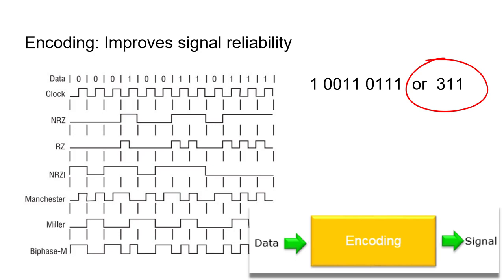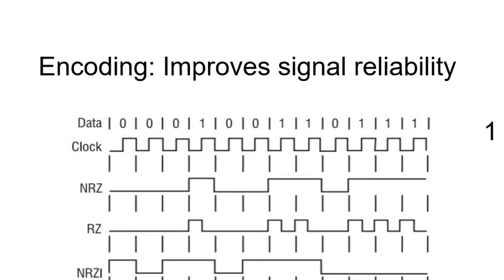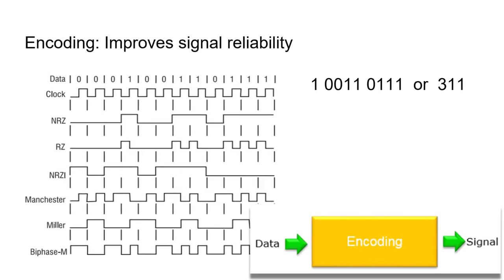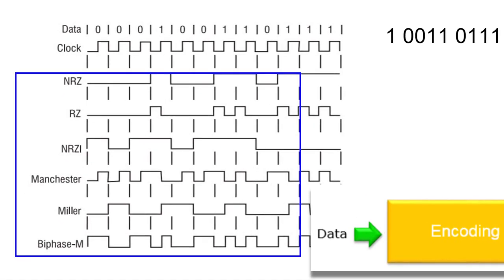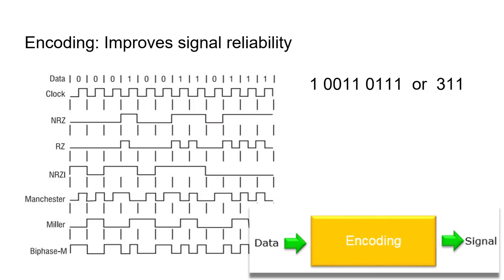If you'll look below the clock signal, you'll see NRZ, RZ, NRZI, Manchester, Miller, Biphase, Dash M. All of those are different encoding techniques. Notice the signal pattern of each of them. They're very different. What engineers have found out is these pattern techniques that represent the same 311 actually produce greater reliability when transmitting digital data over longer distances or high speeds or with greater ability to reject interference. These are critical to digital transmission.